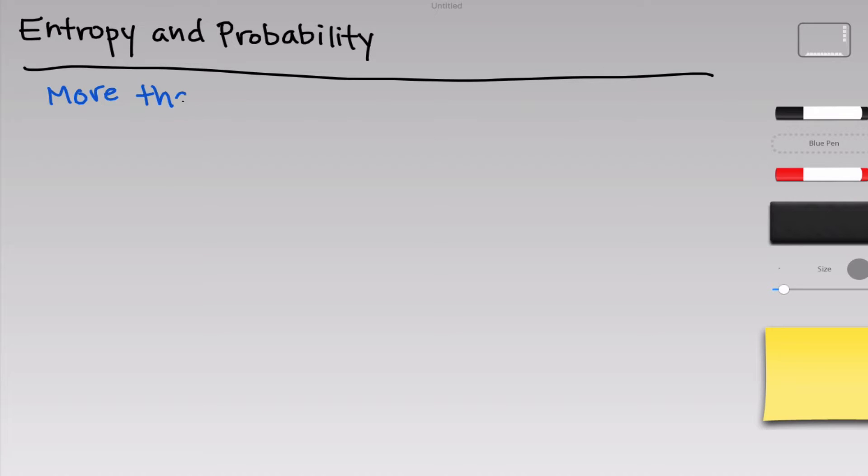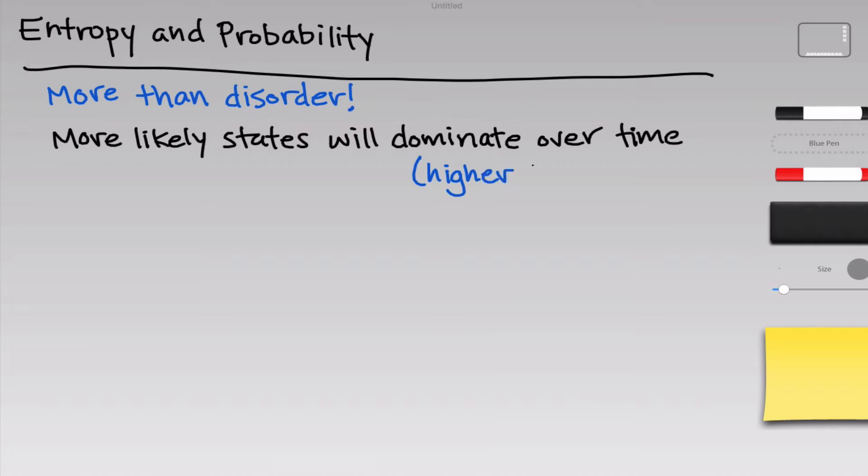Entropy is about a lot more than just disorder. One of the important insights first recognized by Boltzmann is this idea that more likely states of a thermodynamic system are going to predominate over time. They're just more likely to exist, and so they're going to be seen more often as we observe a system evolving over time.